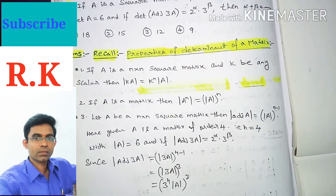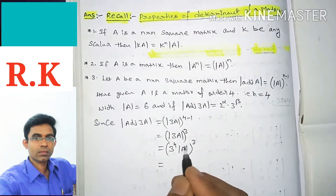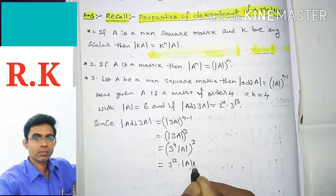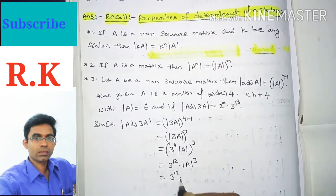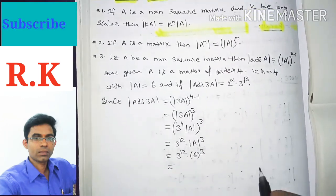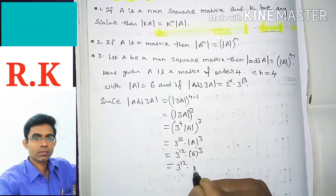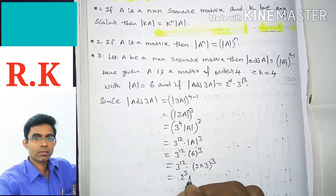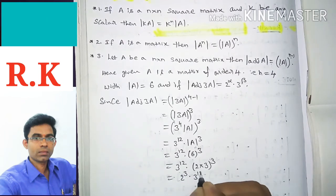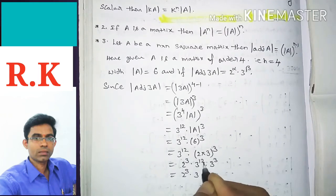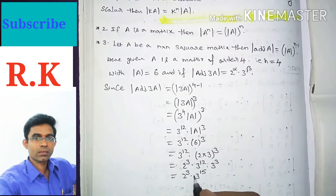By applying that first property and simplifying, we get 3^4 whole cube, which is 3^12, times det(A) whole cube. Since det(A) is 6, this becomes 3^12 times 6^3. And 6 can be written as 2 times 3, so this is 3^12 times (2×3)^3, which equals 2^3 times 3^(12+3), giving us 2^3 times 3^15.